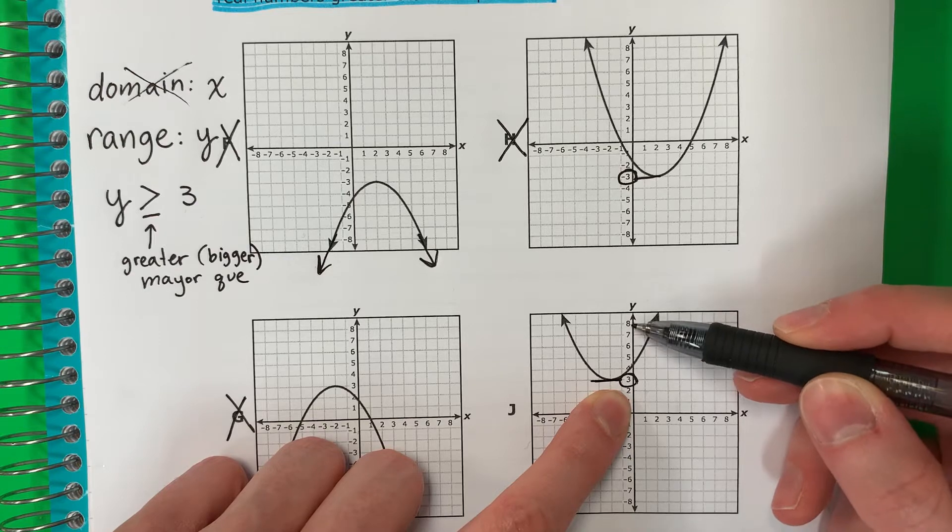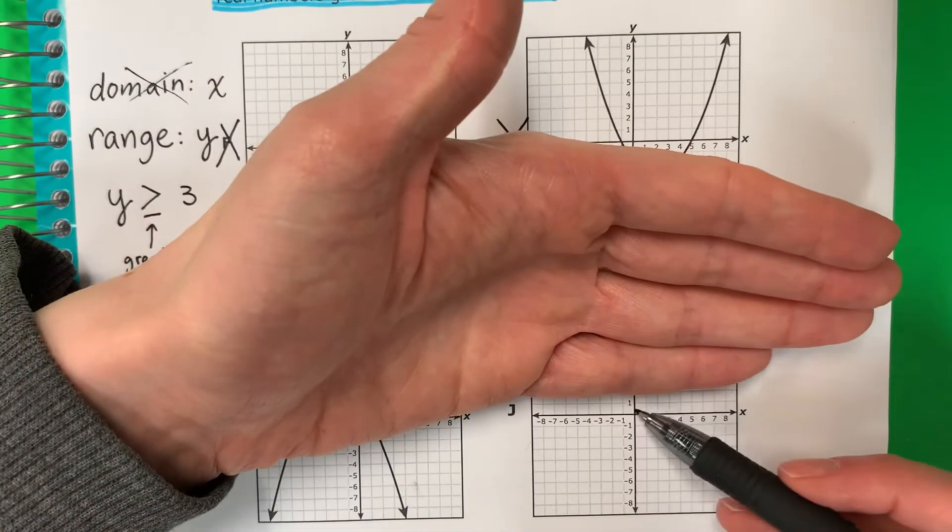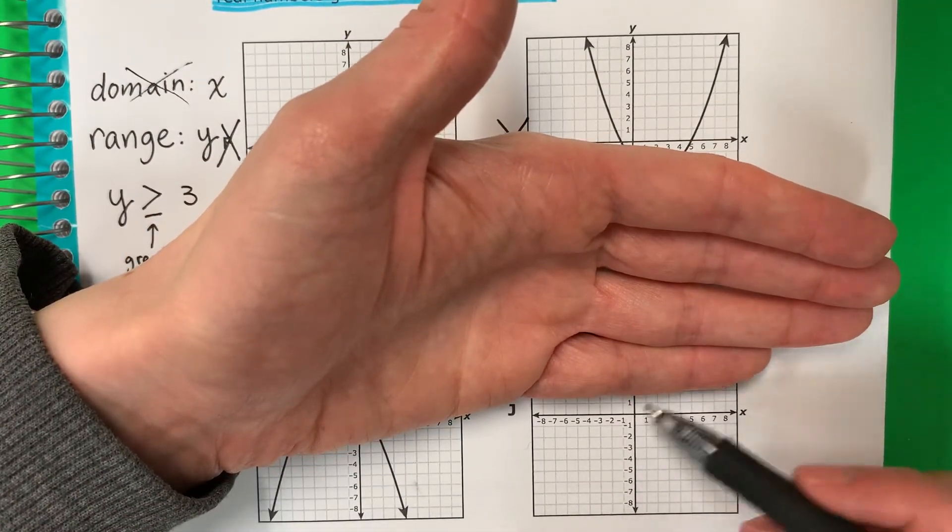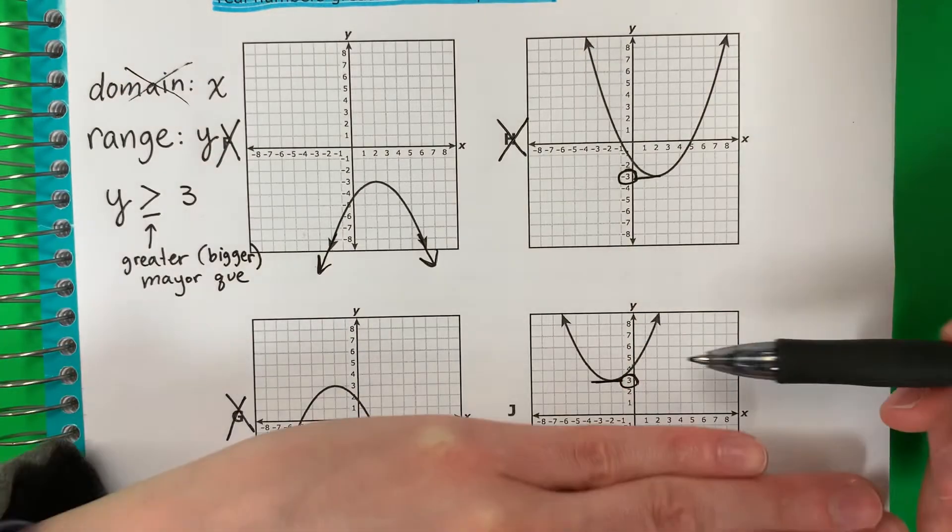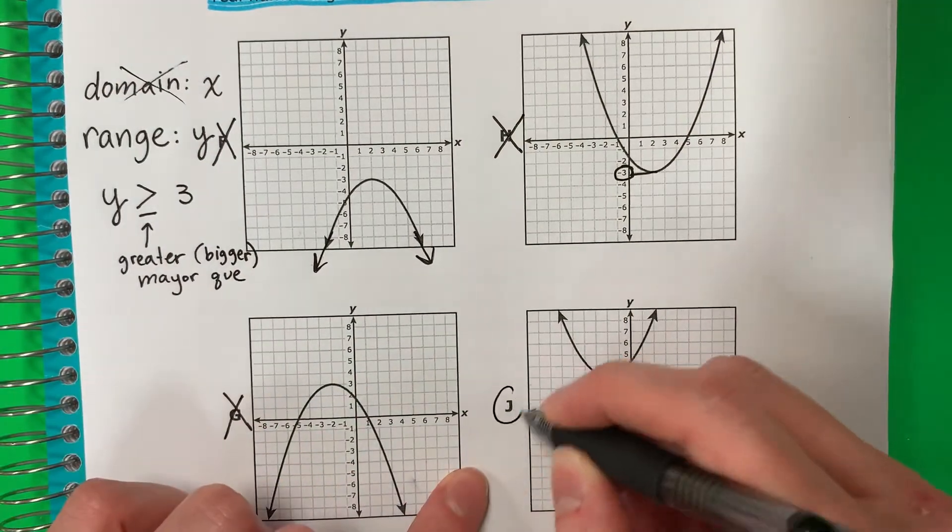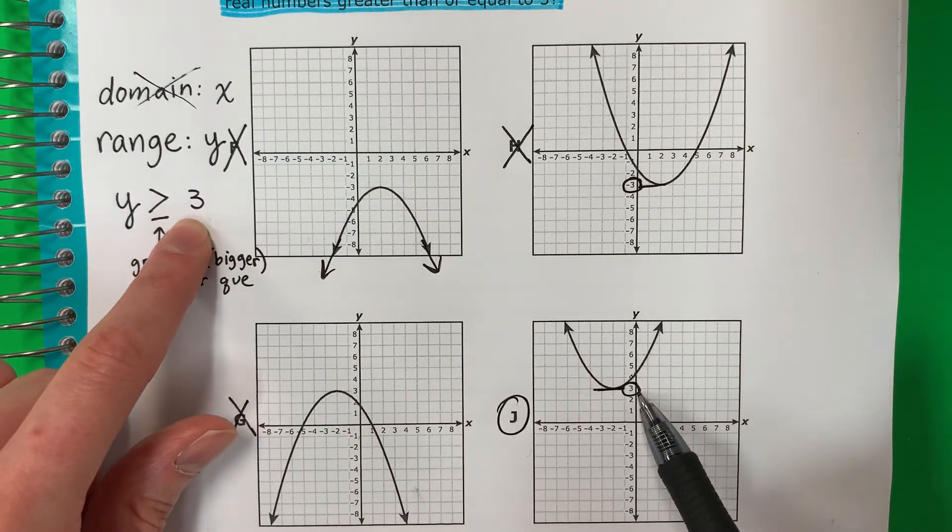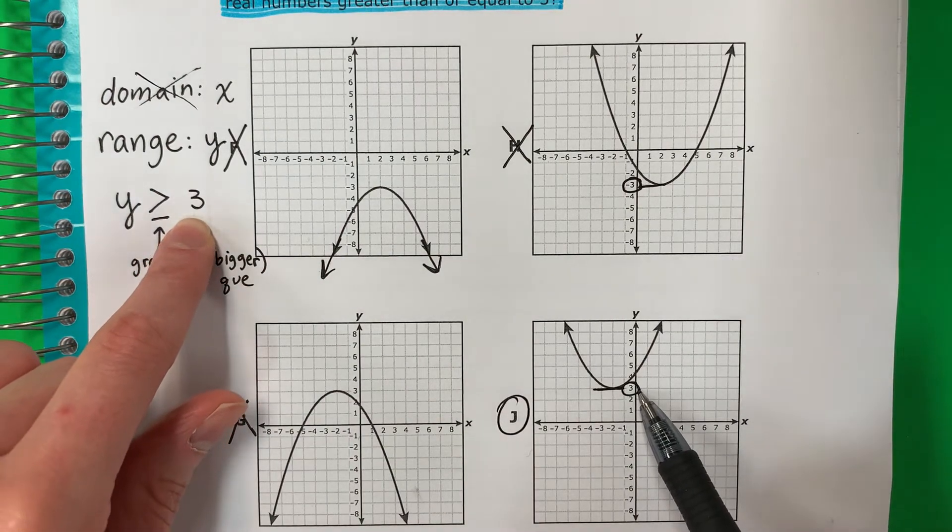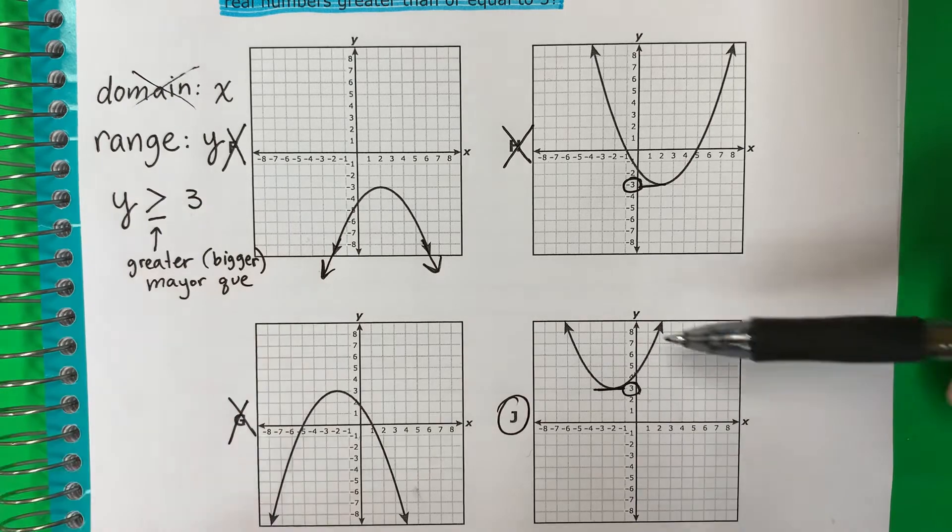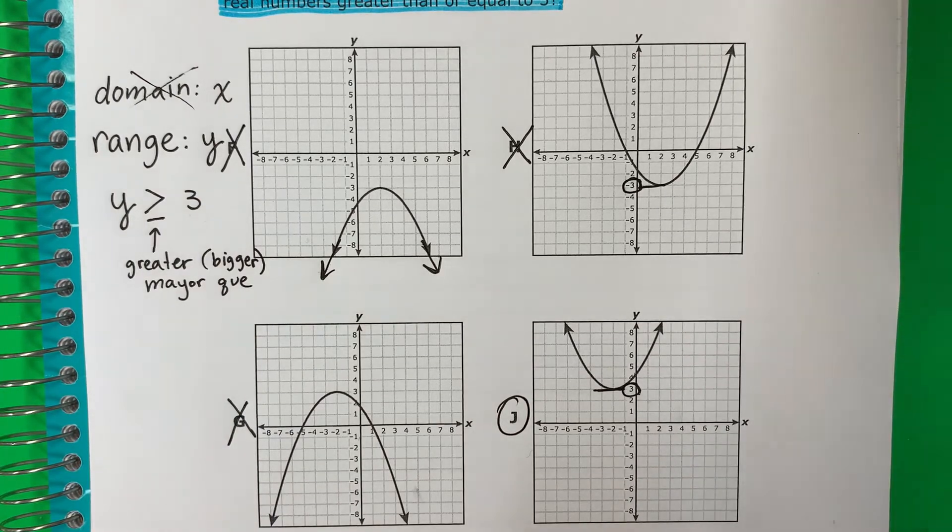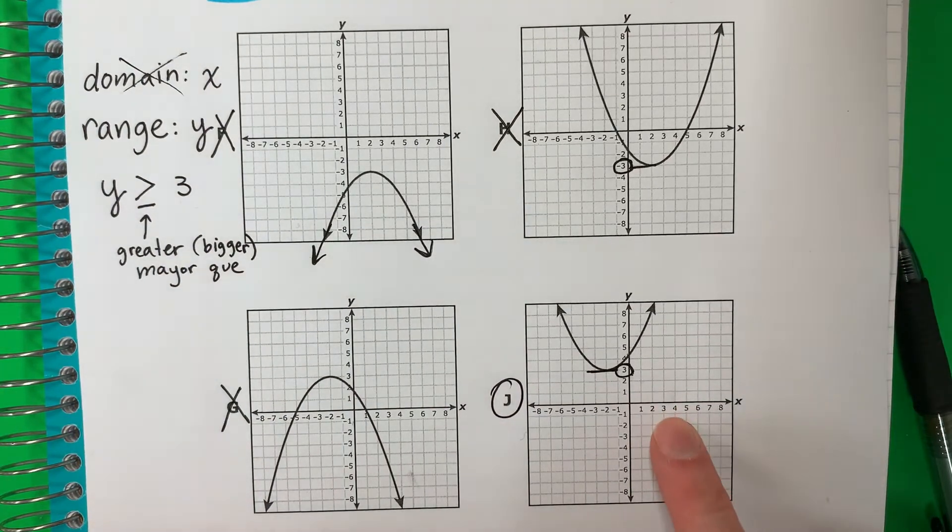Three, four, five, six, seven, eight. There's nothing under three. No hay nada bajo de tres. So this is my number. This is my answer. Esta es mi respuesta. Okay, because I want positive three or bigger. Porque quiero positivo tres o mayor. Remember on the y, en la y. So my answer will be J. Mi respuesta es J.